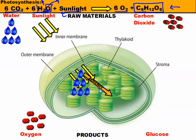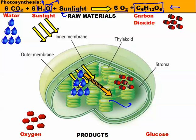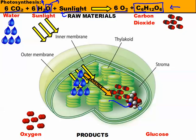The energy made in the thylakoid is used for the second part of photosynthesis. These energy molecules leave the thylakoid and travel out into the stroma, where they react with carbon dioxide that has diffused into the chloroplast. This reaction between energy and carbon dioxide is complex, but what you need to know is that the energy rearranges the carbon dioxide to make glucose. Once the glucose is made, it travels out of the chloroplast into the phloem tissue, and is sent out to the rest of the plant so it can make energy.